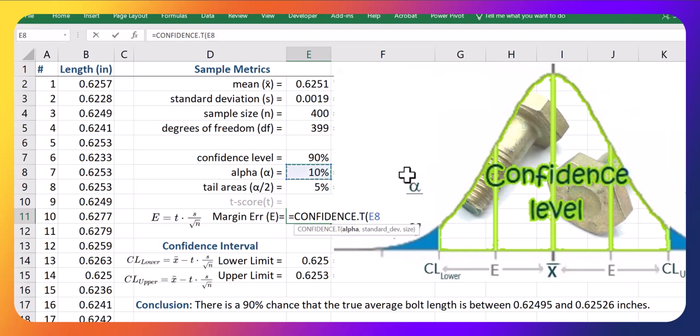Remember, alpha is just the area to the outsides of the confidence interval. So if we have a 90% confidence interval, alpha is 10% for the remaining area. So in confidence.t, put in first the alpha,